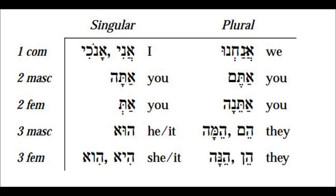Now if we continue to look for consistent patterns, we find the following memory helps. The plural masculine form always takes the mem, generally at the end — the final mem — but sometimes in the center position. This is easy to remember: simply recall that 'male' starts with the phonetic Hebrew equivalent of mem.